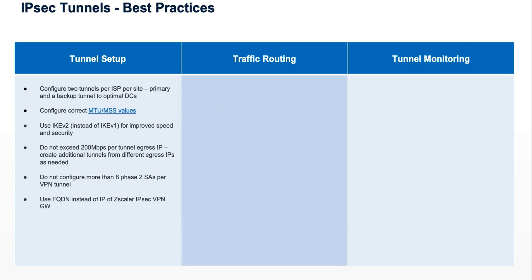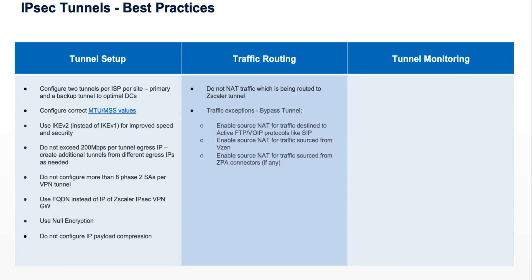Use the FQDN instead of the IP address on the Zscaler IPSec gateway, then make sure that it always resolves to the right Zscaler node. Use null encryption — there is no added benefit to encrypting these tunnels. Also, make sure you don't configure IP payload compression, as it adds overhead on the router and on the Zero Trust Exchange that is not necessary.